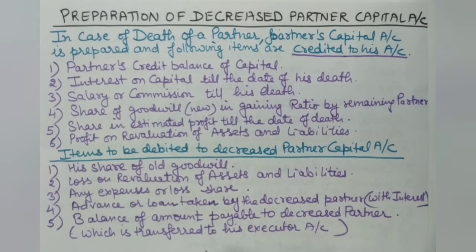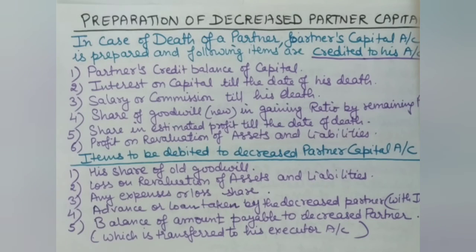This completes the process for the death of a partner — we have prepared the deceased partner's capital account, credited and debited all relevant items, and transferred the balance to the executor's account. The other remaining partners' capital accounts will be closed when the accounting year ends. Don't forget to like, share, and subscribe to this channel. Thank you.